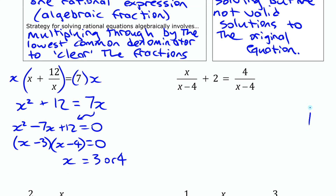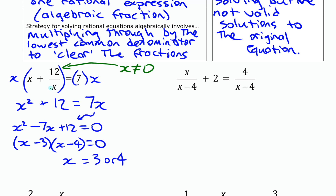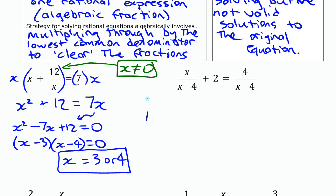Now we need to check whether these solutions are extraneous by thinking about the restrictions on the original equation. The expression has the restriction that x cannot be 0, because the denominator cannot be 0. Neither 3 nor 4 is 0, so both solutions check out and are valid.